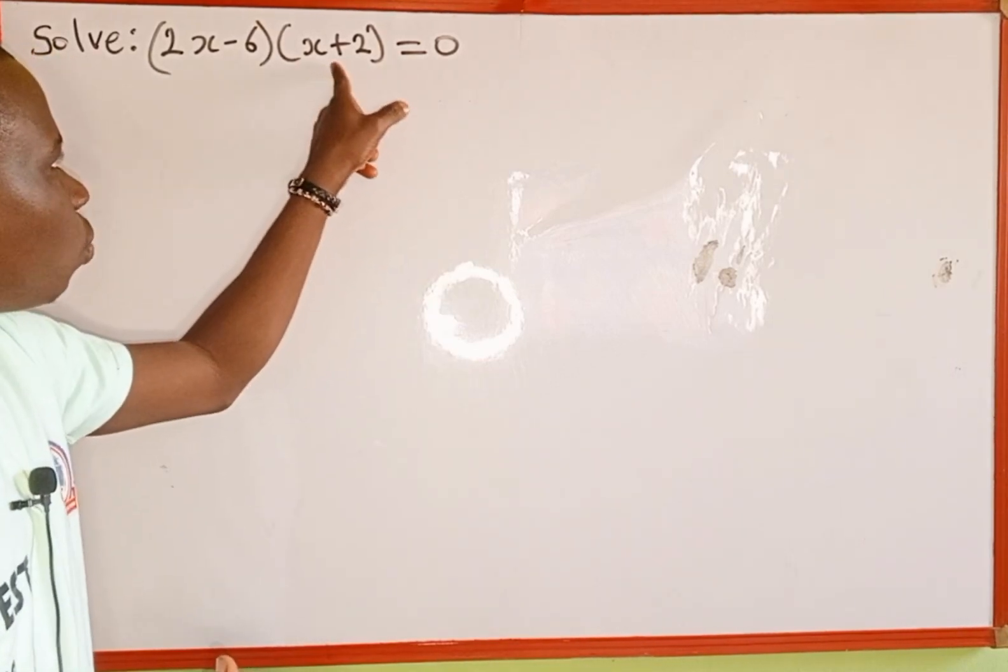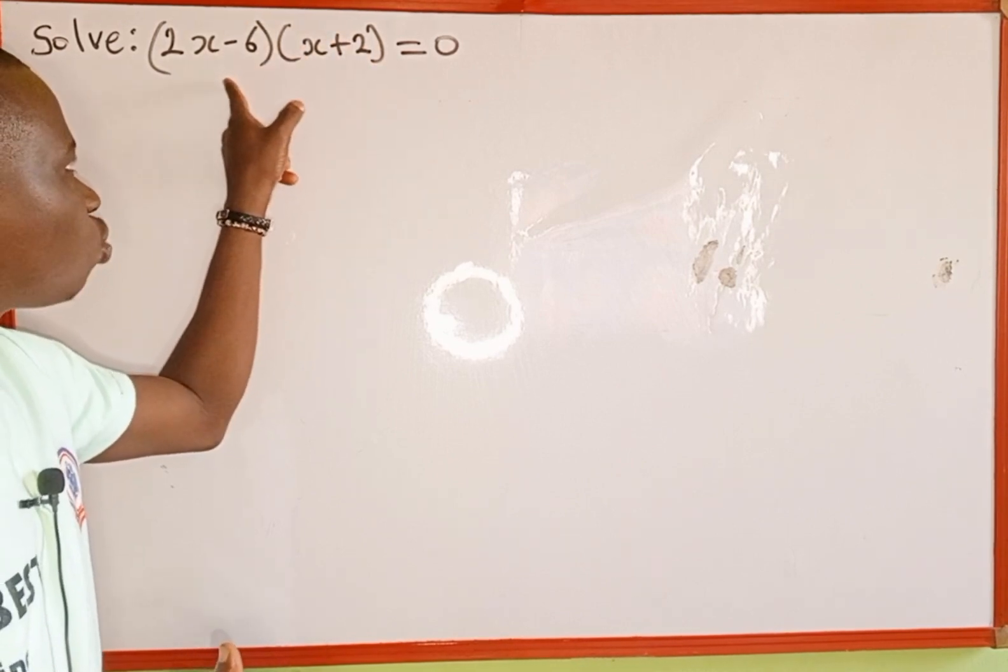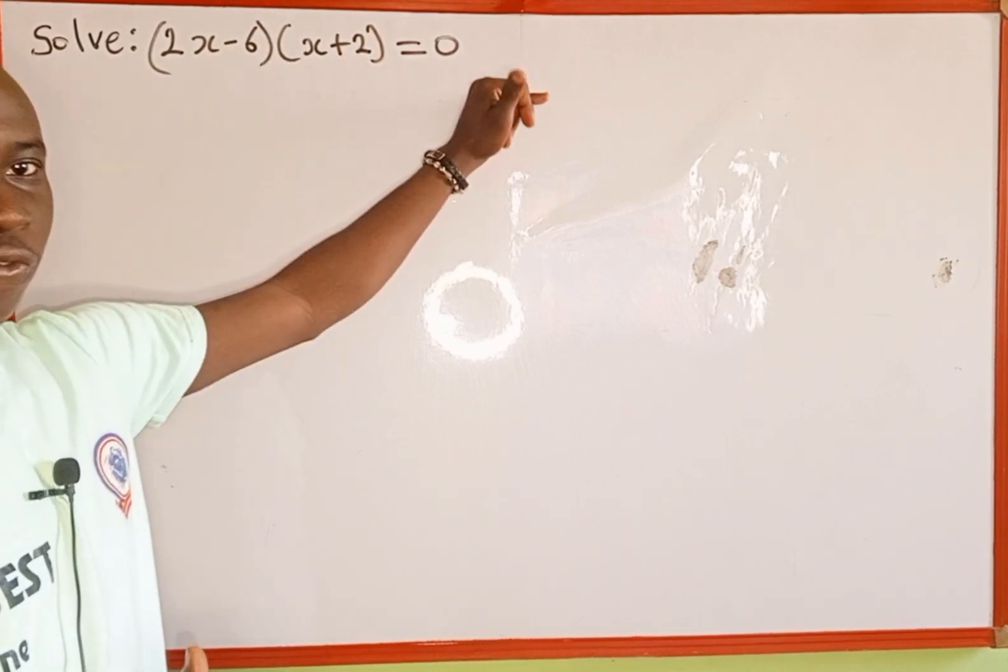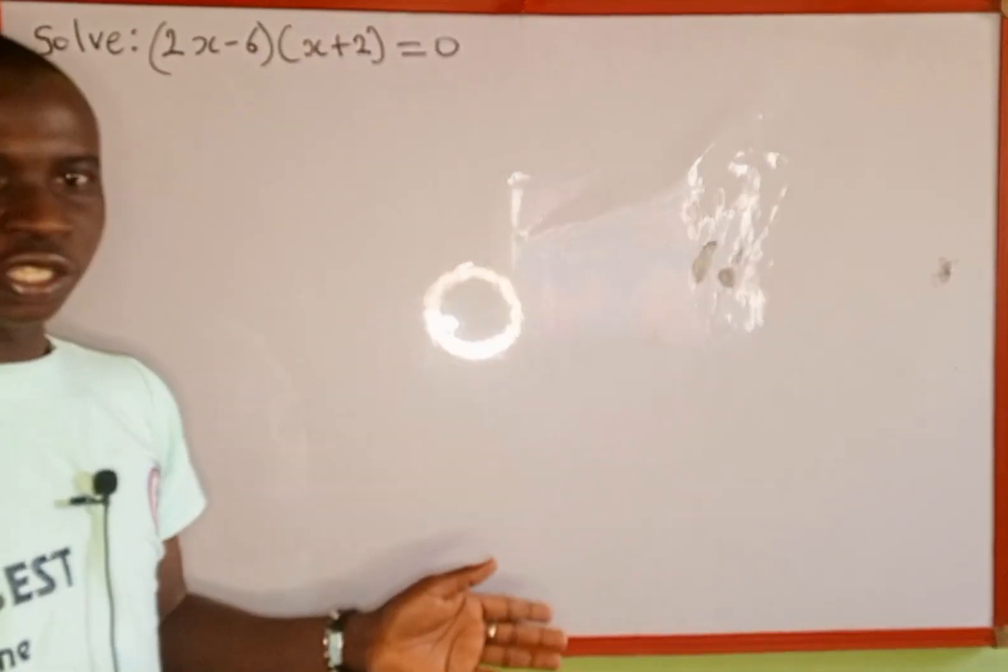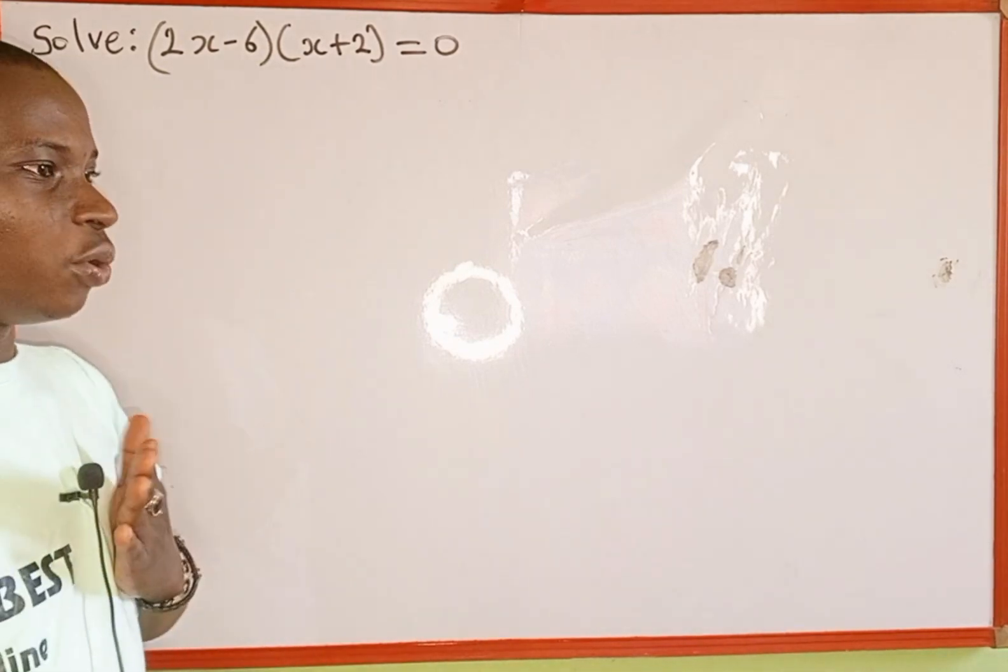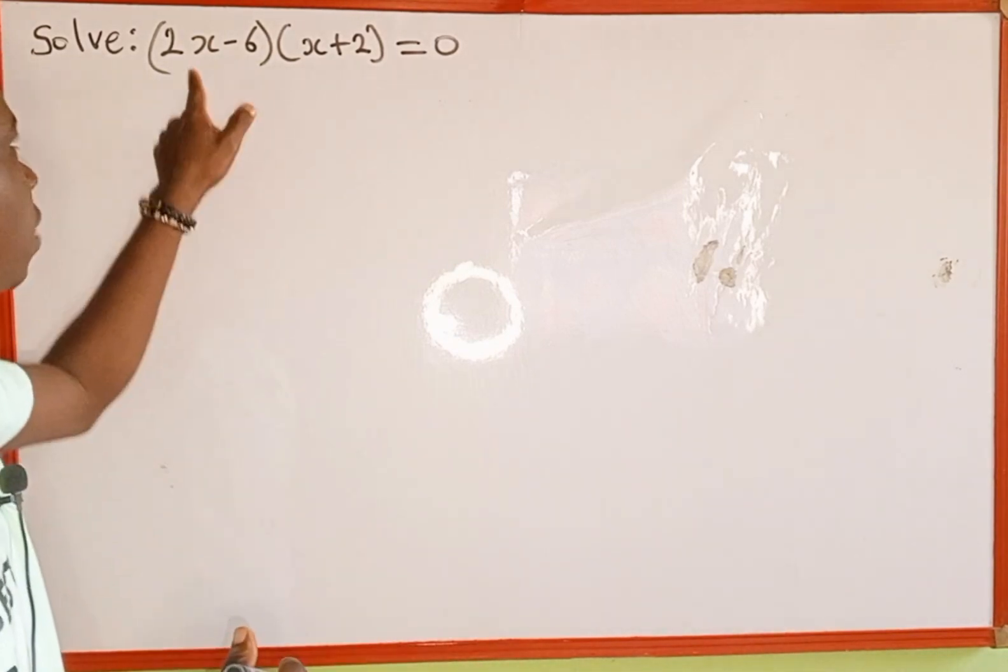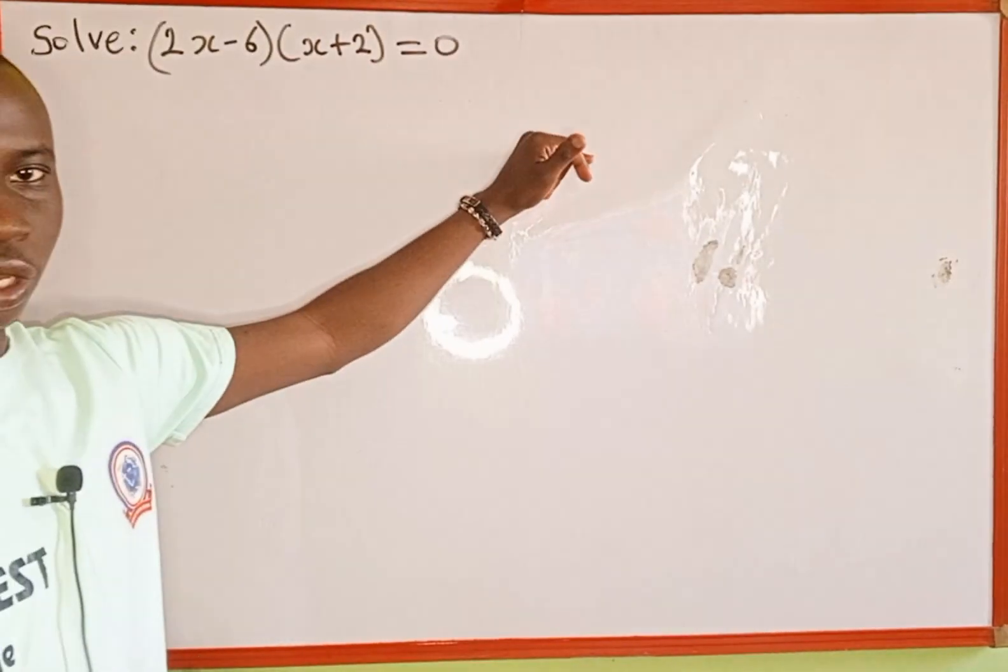Therefore, this is either 0 or this, because one must be 0 to multiply the second one to give us 0. But we don't know between these two brackets which one is 0. Do you know which one is 0? No, you don't know and I don't know. So what we are going to do is let the first bracket be equal to 0 or the second bracket be equal to 0.